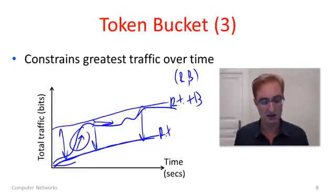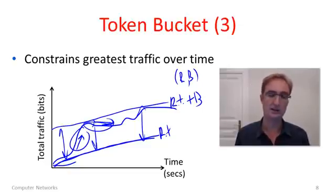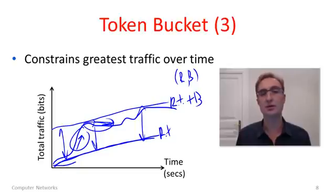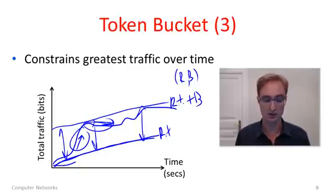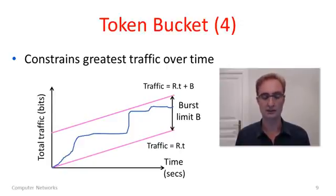Then it had to send more slowly — pretty much nothing for a while — until it got back down closer to its long-term rate. So an RB token bucket source constrains the traffic that an application can send into the network.